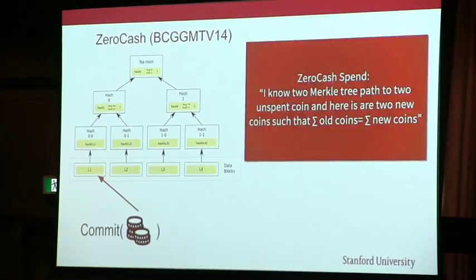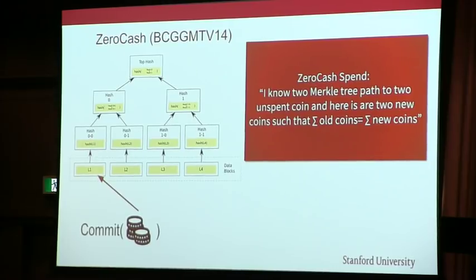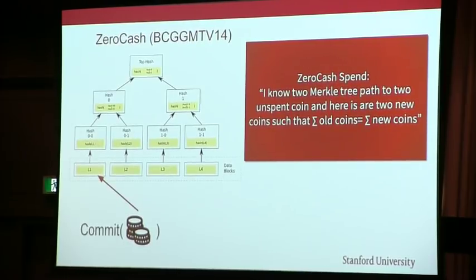In Zcash, you basically prove that you know a Merkle tree path to two unspent coins, and here are two new coins, such that the sum of the old coins is equal to the sum of the new coins, plus some additional conditions. This complicated statement can be expressed in a circuit, and then we can do a zero-knowledge proof such that this statement is true.